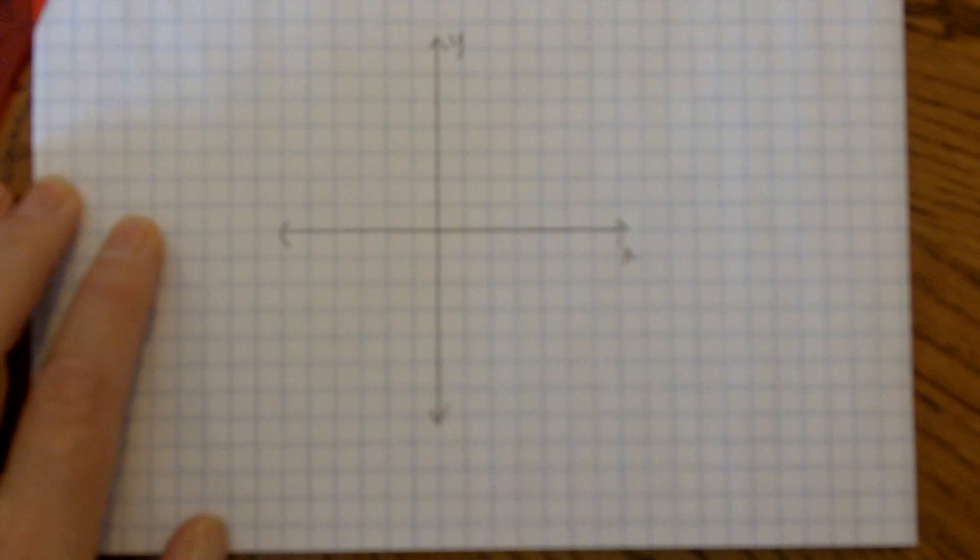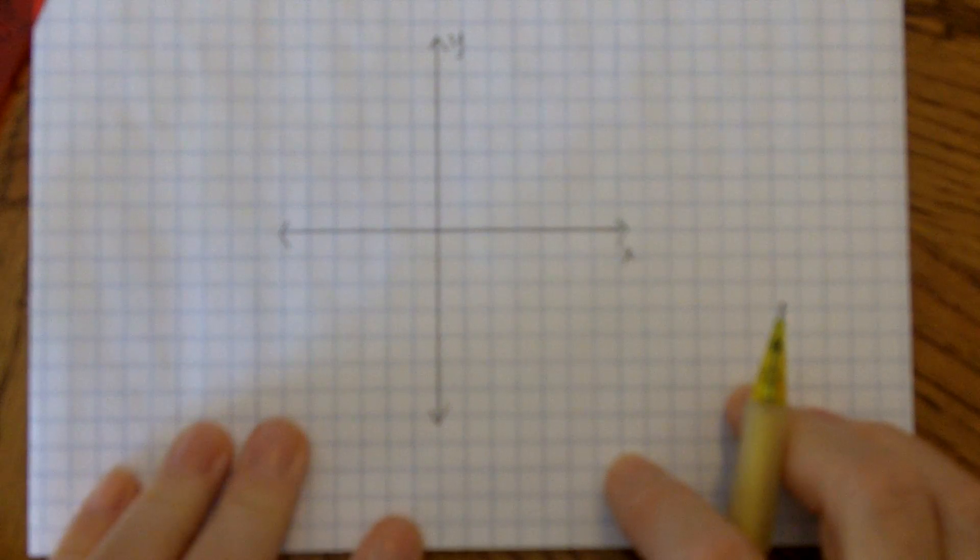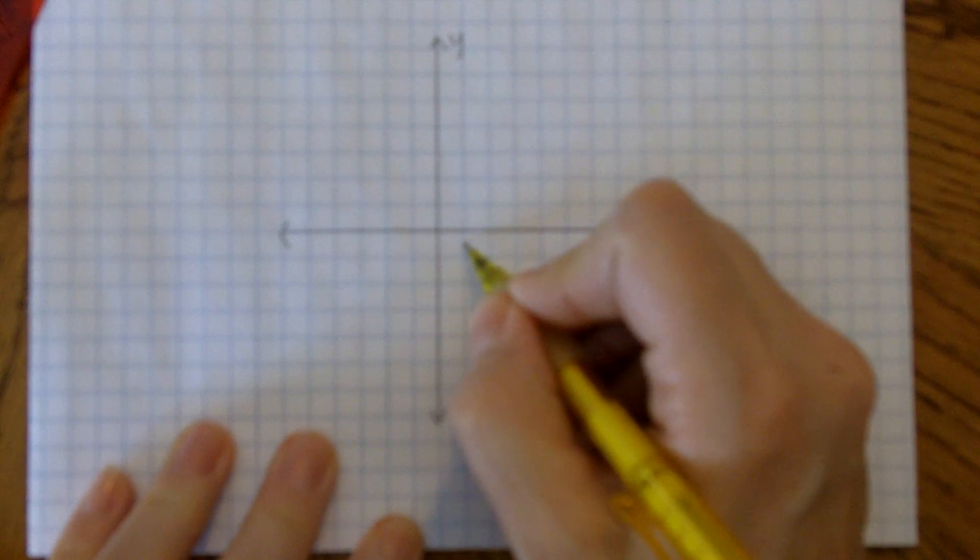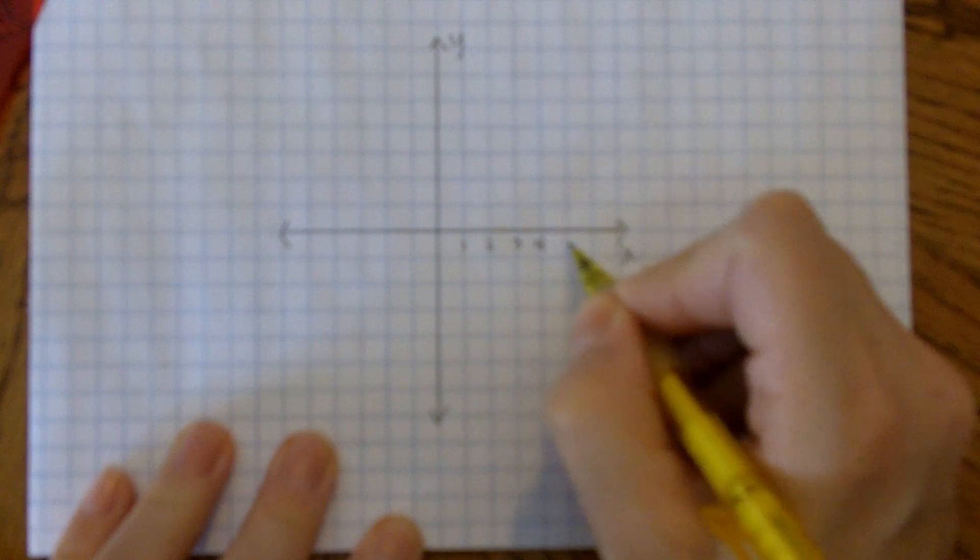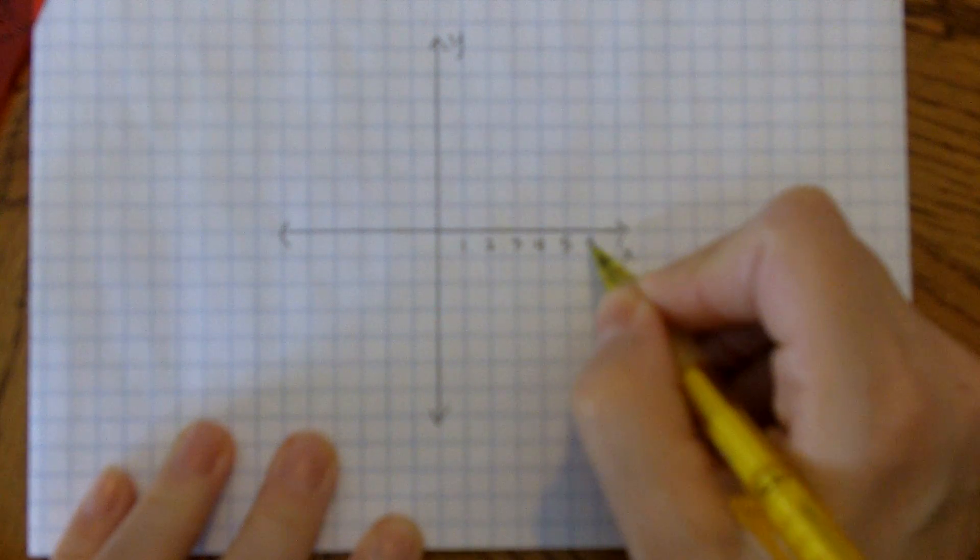The next step is to scale the axes. Use one whenever possible, otherwise you might be distorting the shape of the graph. I'm numbering the lines, not the spaces.